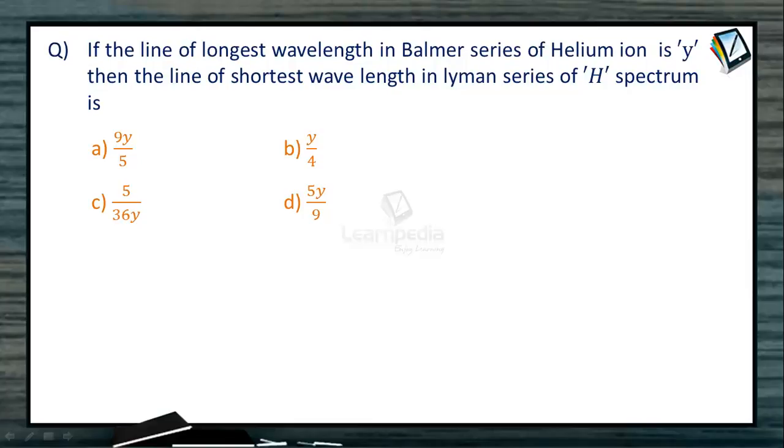Next question. If the line of longest wavelength in Balmer series of helium ion is Y, then the line of shortest wavelength in Lyman series of hydrogen spectrum is. We know that the wavenumber nu bar, which is the reciprocal of wavelength, is given by Rh into Z square into 1 by N1 square minus 1 by N2 square.